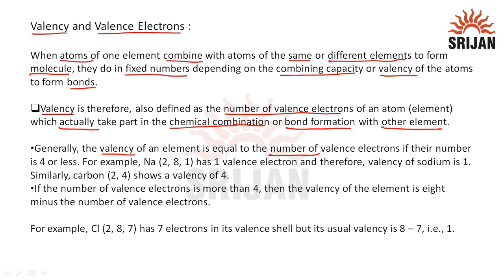Generally, the valency of an element is equal to the number of valence electrons if their number is 4 or less. For example, sodium (Na) has the electronic configuration 2, 8, 1 — so it has one valence electron, therefore its valency is 1, meaning it can form a single bond. Similarly, carbon has the configuration 2, 4, giving it a valency of 4 since it has 4 valence electrons.